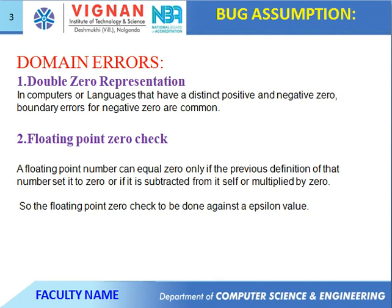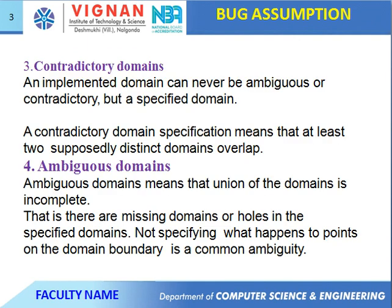Domain bugs assumption: first one is the double zero representation. In computers or languages that have distinct positive and negative zero representations, boundary errors for negative zero are common. Second one is the floating point zero checking: a floating point number can be equal to zero only if the previous definition of that number was set to zero. So floating point zero checking should be done against an epsilon value.